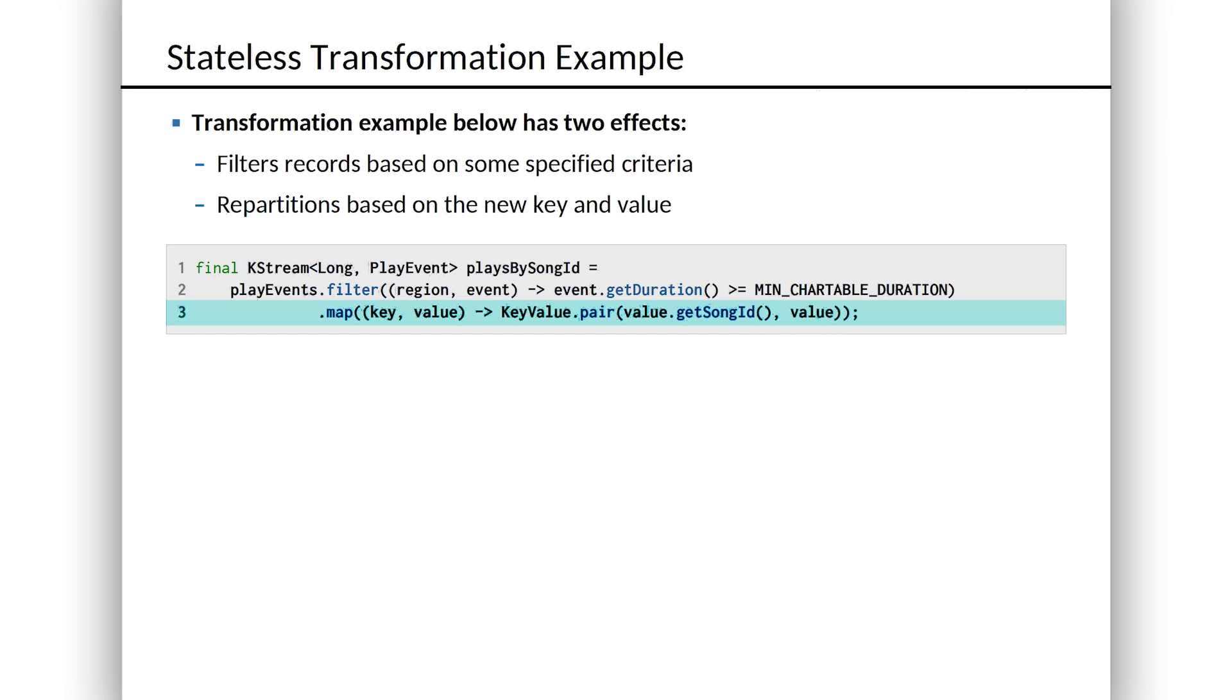What map does is it takes every event that impinges on the stream, every event in the stream and passes it into the Lambda here that we're running. So you get to look at every single event and the return value of the Lambda is going to be the new key value pair for the resulting stream.